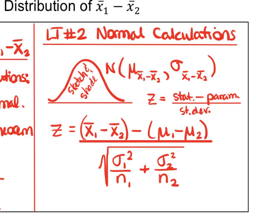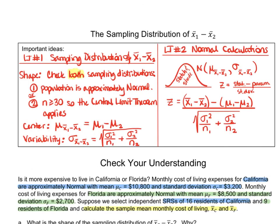You're now ready for your check-your-understanding questions. This series of three questions will take you through defining the shape, center, and standard deviation of the sampling distribution of the difference between the monthly cost of living expenses in California and Florida. In part C, you'll calculate the actual probability — remember to do your sketch and shade. Answers will be posted online. Good luck, and I'll see you back in class.